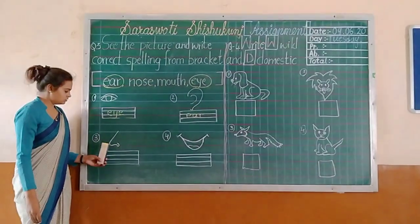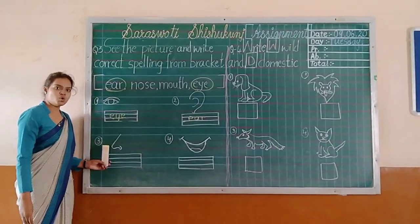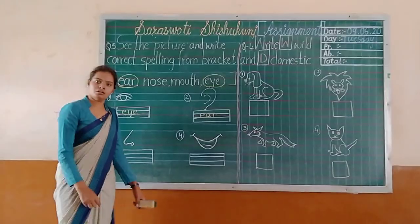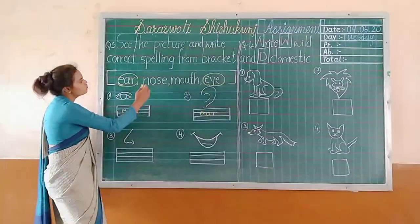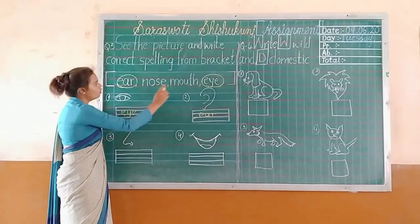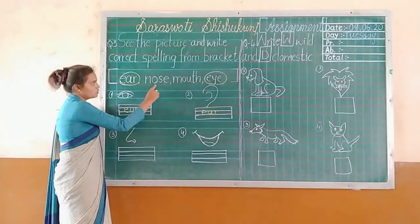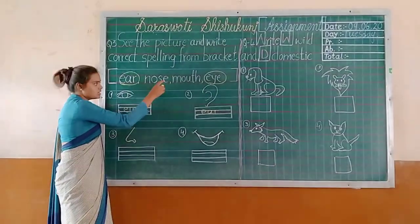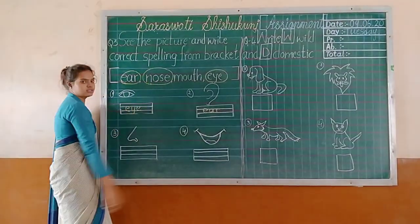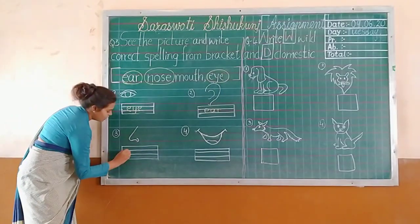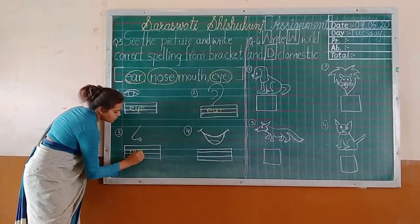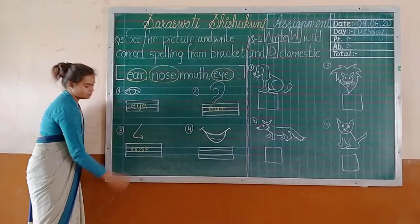Next, the third one — which body part? Nose. From the nose you can smell. So where is the spelling of 'nose'? N-O-S-E. Yes, nose. So circle the nose and write it here: N-O-S-E. Nose.